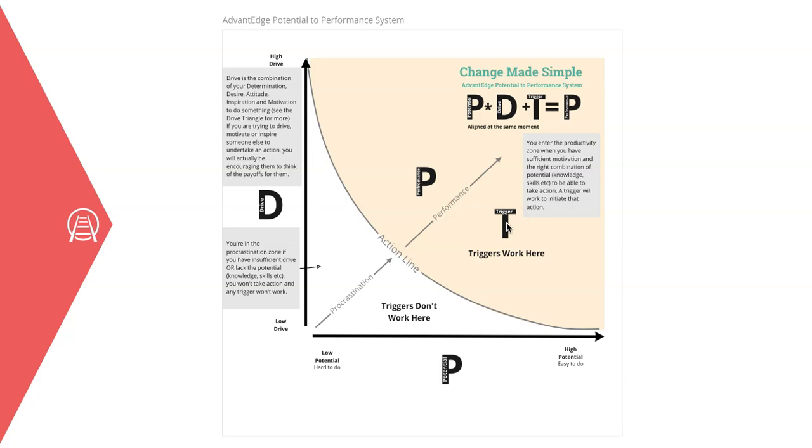Explain the model. You can visualize this model has two dimensions. The vertical axis is your level of drive to perform an action, and it can range anywhere from high drive to no drive.